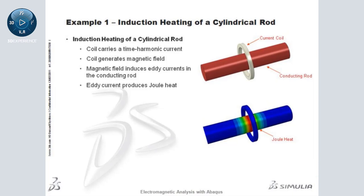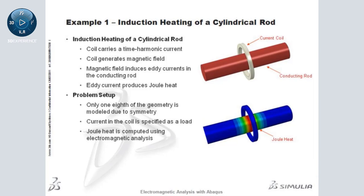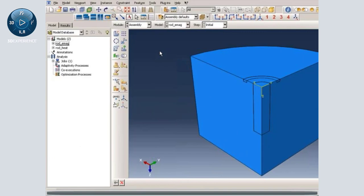To demonstrate the workflow, we will use the induction heating of a cylindrical rod example. Before we get started, I'll highlight some details of the problem setup. To take advantage of symmetry, only one-eighth of the geometry will be modeled. The load will be a current specified in the coil. Joule heat will be computed in the electromagnetic analysis, and the output from that analysis will be used to run a subsequent thermal analysis. Presenting most of this demonstration will be electromagnetic analysis specialist Krishna Gundu.